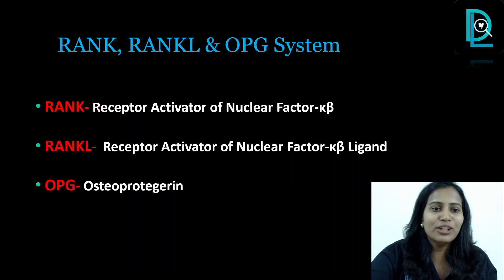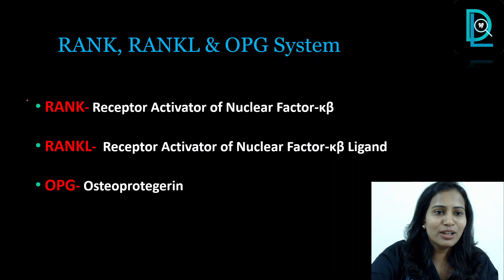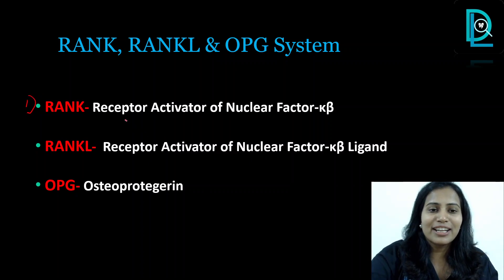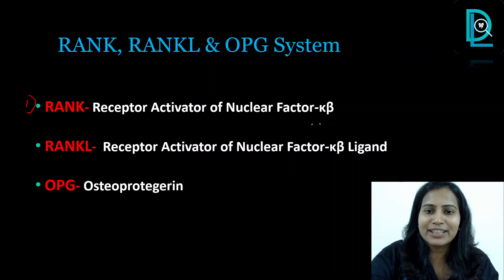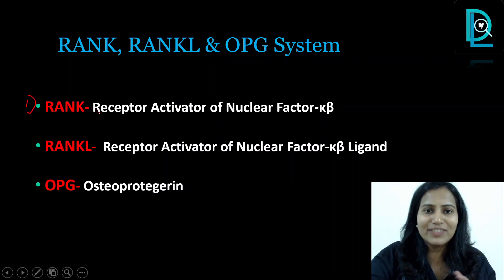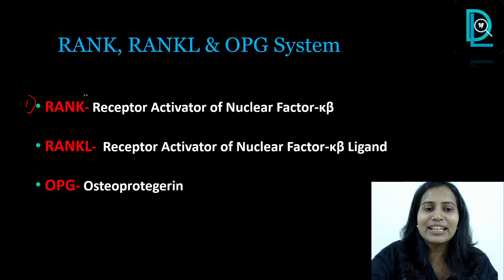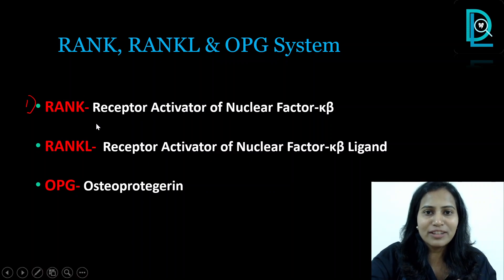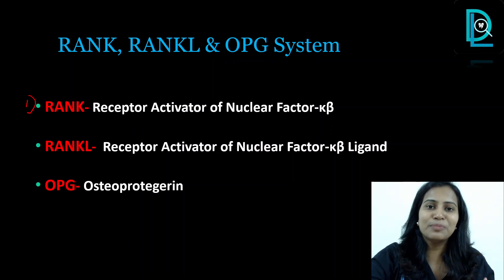First of all, RANK stands for Receptor Activator of Nuclear Factor Kappa B — that is the expansion of RANK, and this itself is an MCQ. It is expressed on the cell surface of your osteoclast precursor cells.